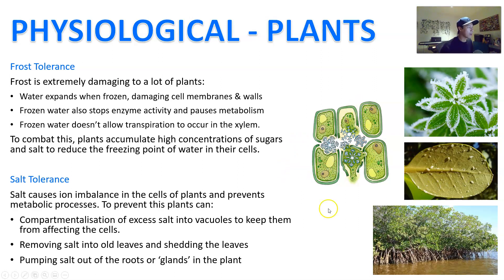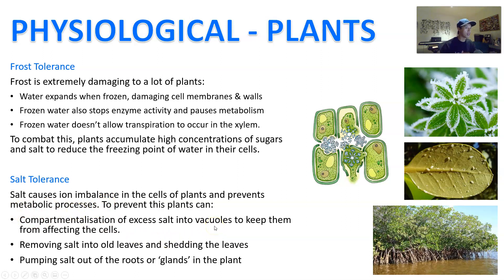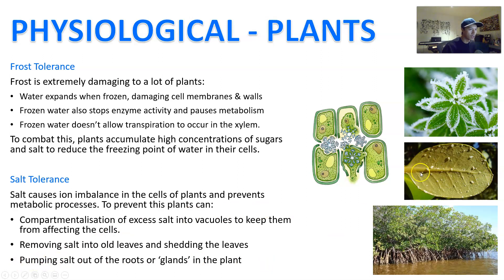Plants also have salt tolerance. Here's an example of mangroves, which live in brackish to salt water. The plant faces a problem because too much salt in the cells causes an ion imbalance that prevents metabolic processes. Plants can combat this by compartmentalizing excess salt into certain vacuoles, keeping it from affecting the rest of the plant. They can also stash salt in old leaves and then shed those leaves, or they can actually pump salt out of the leaf itself — here's a mangrove leaf with salt being pushed out of the plant through roots or glands.